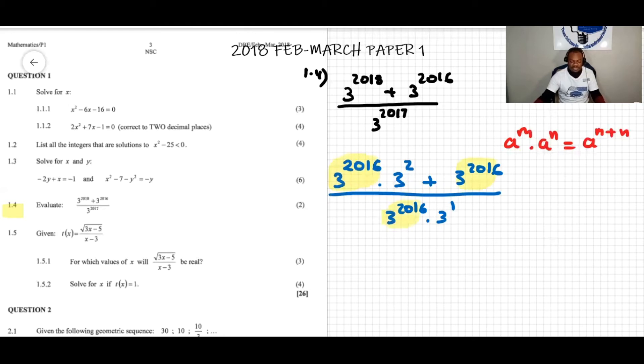We can take 3 to the 2016 as the common factor. We will have here 3 to the power of 2 plus, not zero but one, because if you take 3 to the power of 2016 out as a common factor, we left one over there. And then here it's like 3 to the power of 2016 times 3 to the power of one, which is just three.